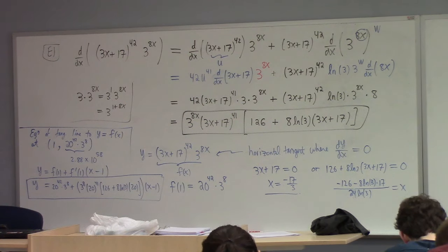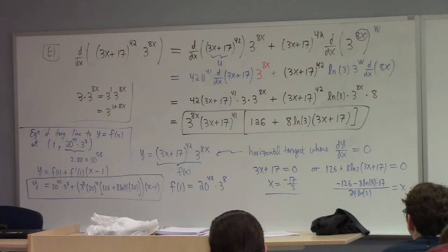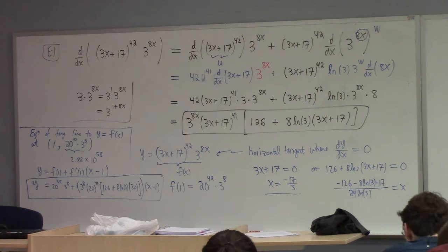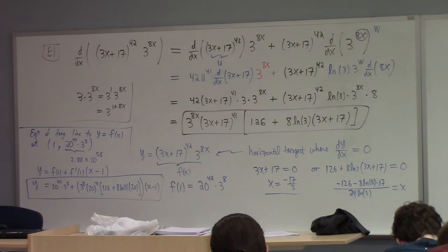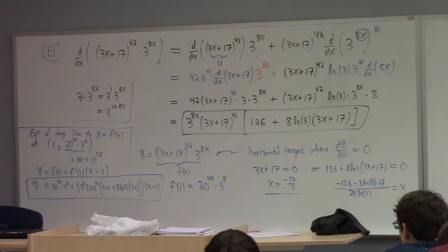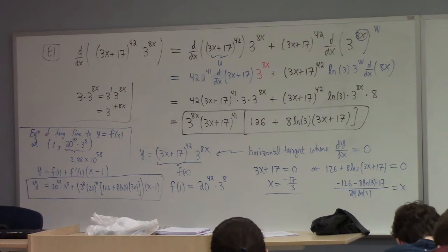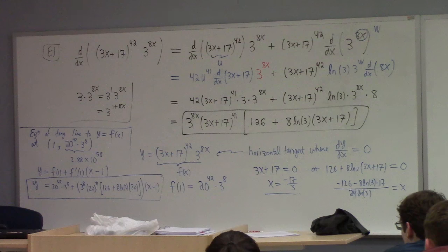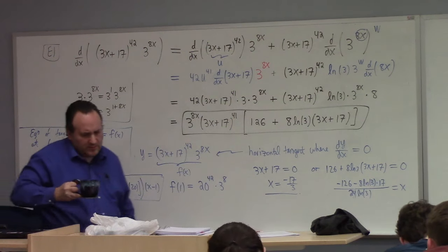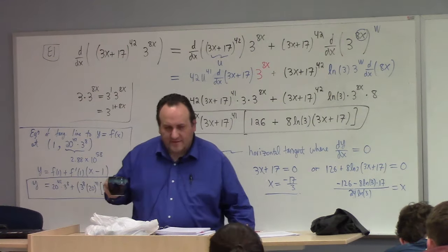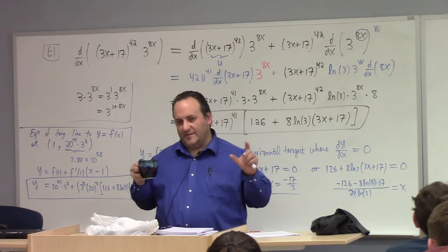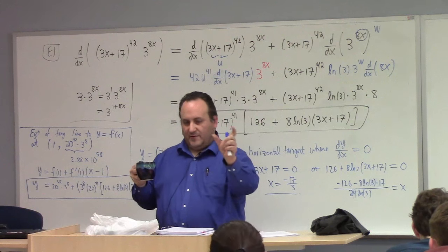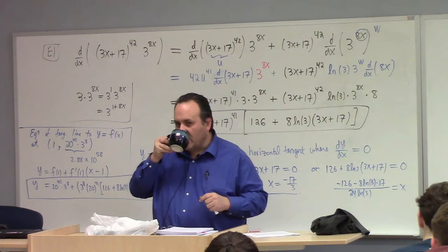Does that make sense for the homework problem? The key is: product rule to start, and then chain rule to unravel each piece. In that homework problem, it's x plus 3 to the 10th. So you don't want to multiply it out — think of it as the 10th power composed with (x + 3).